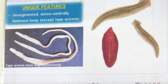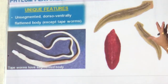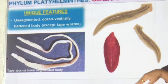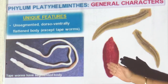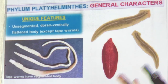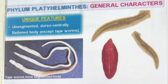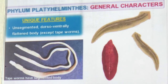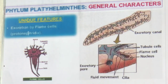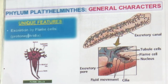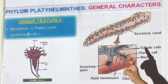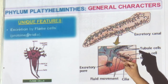The body of Platyhelminthes is flat like a blade or a page, except tapeworms which have segmented bodies. They are flat so they can stick to the liver or inside the body. Tapeworms are specially developed so they can coil inside the intestine. The unique feature is excretion by flame cells — no other animal has flame cells. Flame cells are a primitive kidney called protonephridia — the nephron has not yet developed.